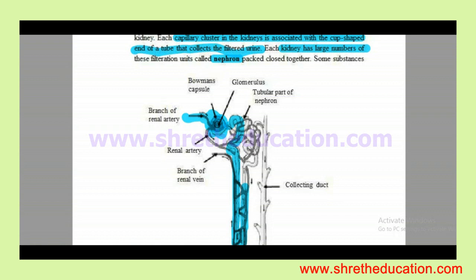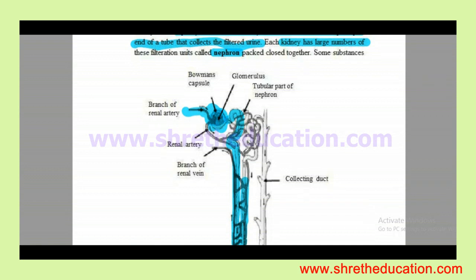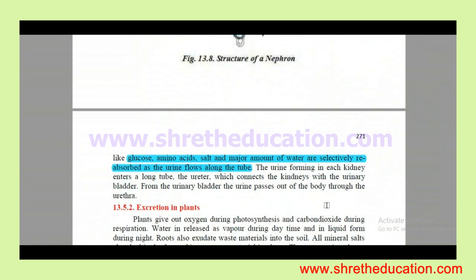After filtration, water and useful substances like glucose, amino acids, salts, and electrolytes are selectively reabsorbed. The urine formed in each kidney passes along the ureter to the urinary bladder, and is then passed out through the urethra. This completes excretion in human beings.